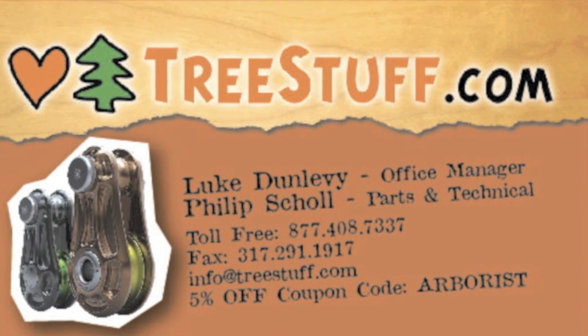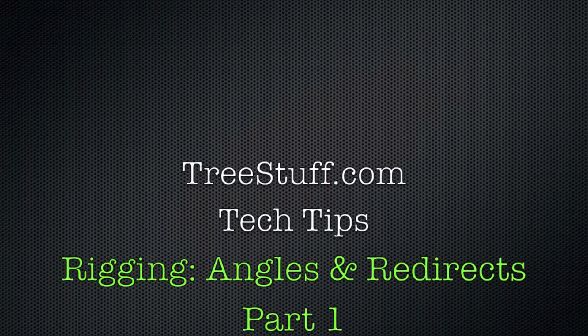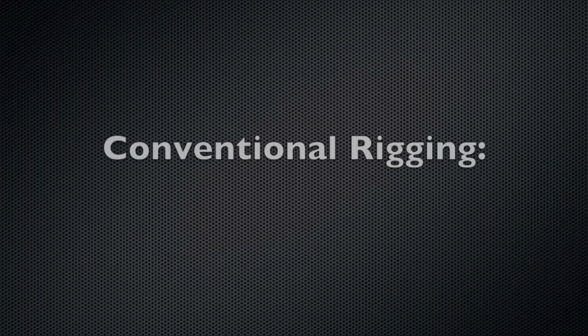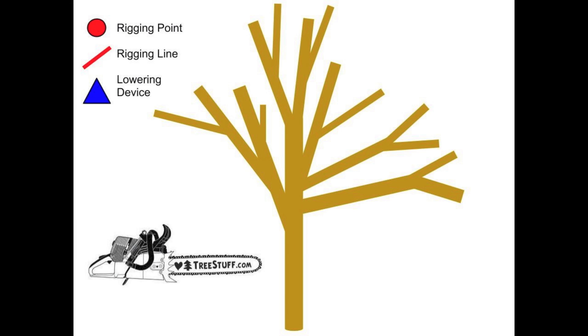TreeStuff.com Tech Tips brings you Rigging Angles and Redirects, Part One. Using conventional rigging methods, standard operating procedure dictates that a climber sets a block in the high center of the tree, then climbs out the limb as far as possible, rigs it, and cuts it, allowing the limb to swing towards the center of gravity and past the worker.